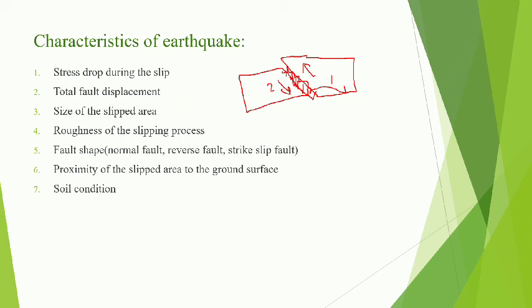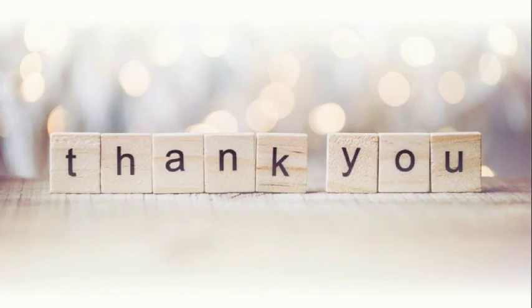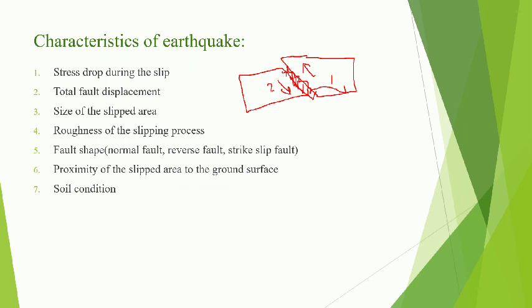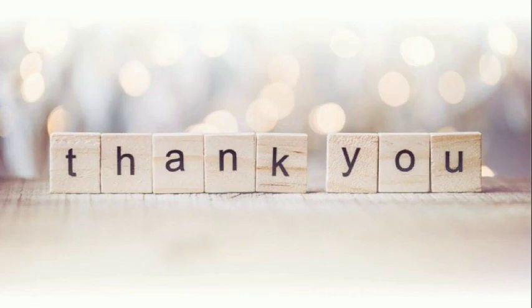Then it is the proximity of the slipped area to the ground surface, and last one is the soil condition. If this is a soil which is not a granular soil, or a soil which is having less bearing capacity, then it will store less strain and get deformed easily, which leads to the slipping of the surface. And if it is a granular soil having more bearing capacity, then it will not get easily deformed or does not get failed. So the chances of earthquake or the magnitude of earthquake formed will be less. In this way, these are the characteristics of earthquake. Thank you.